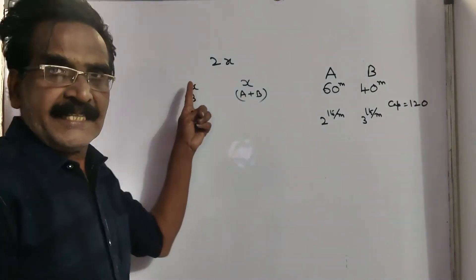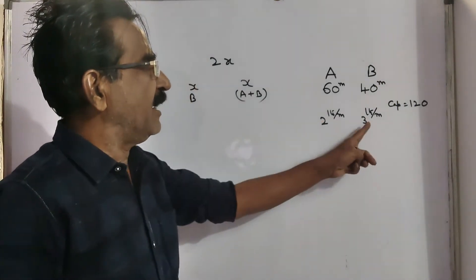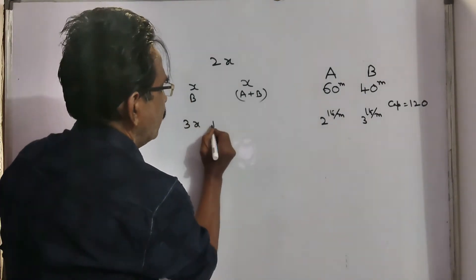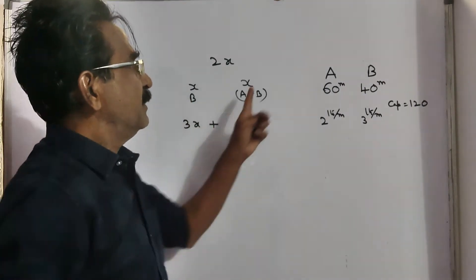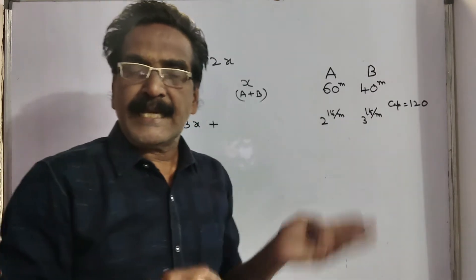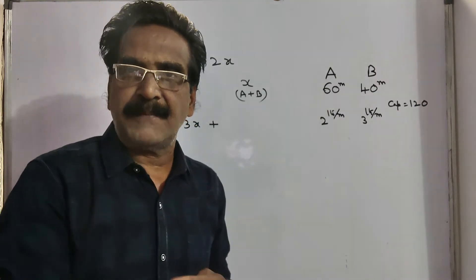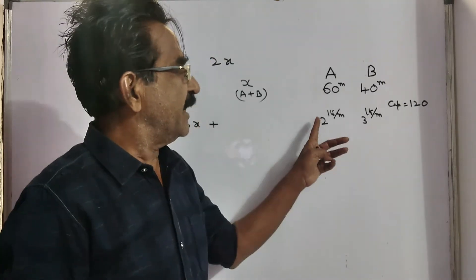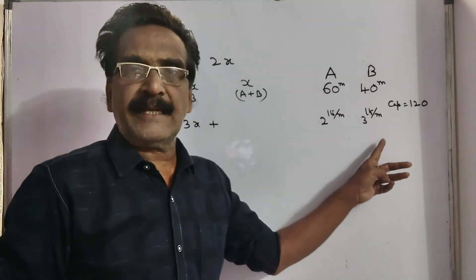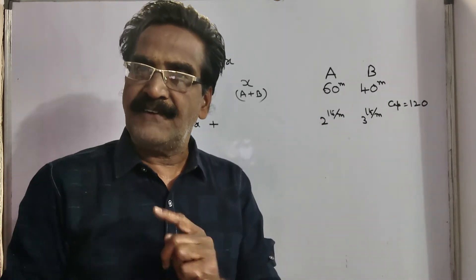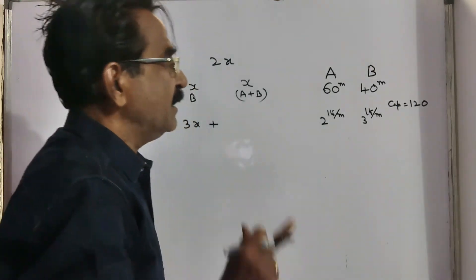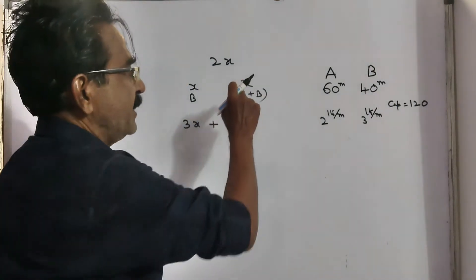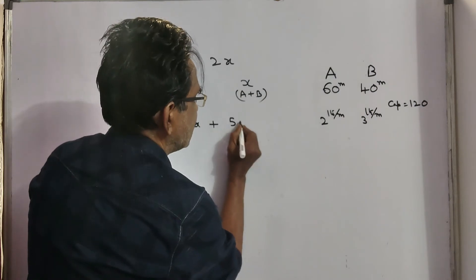So in X minutes, pipe B can fill 3X liters. Plus, in the second half — the second X minutes — A and B together work. That means 2 plus 3 equals 5 liters of water is filled every 1 minute. So in X minutes, 5X liters is filled.